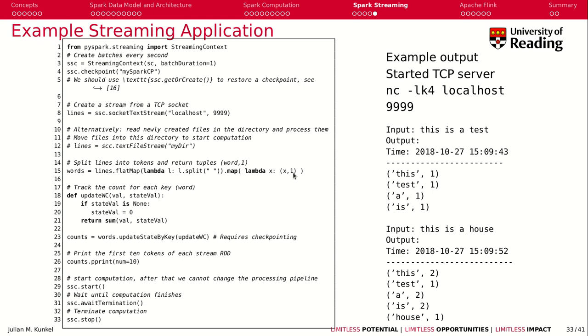We say word comma one, so we can know for each, we do pretty much our word count example again, right? We have here a function that updates this word count, and we use our checkpointing features, we print a couple of tokens for each stream, and then we start the computation, and it runs until it is terminated, okay?